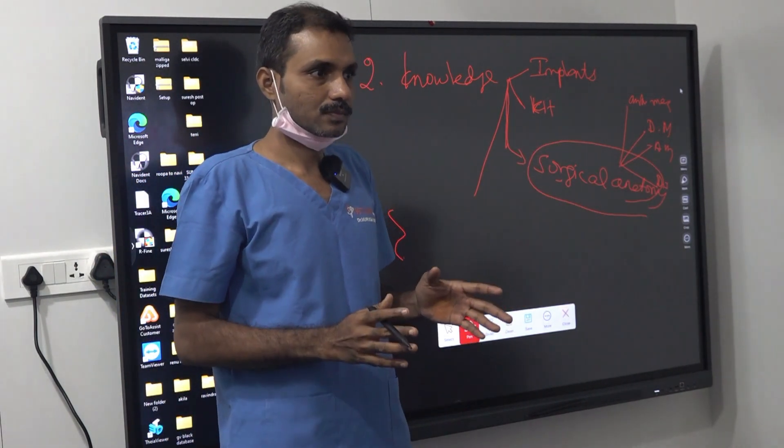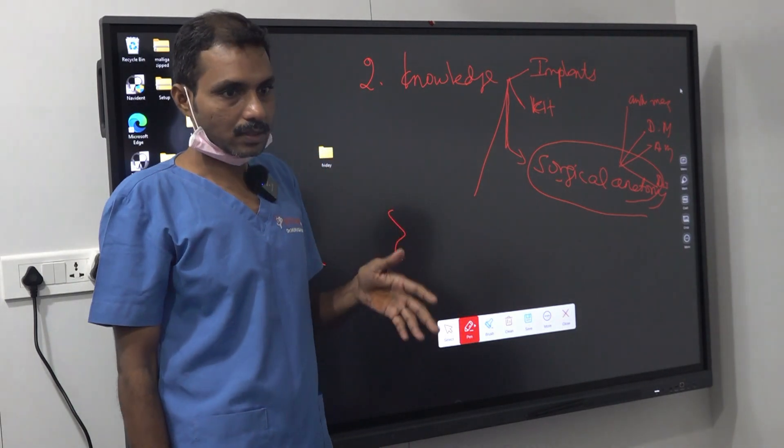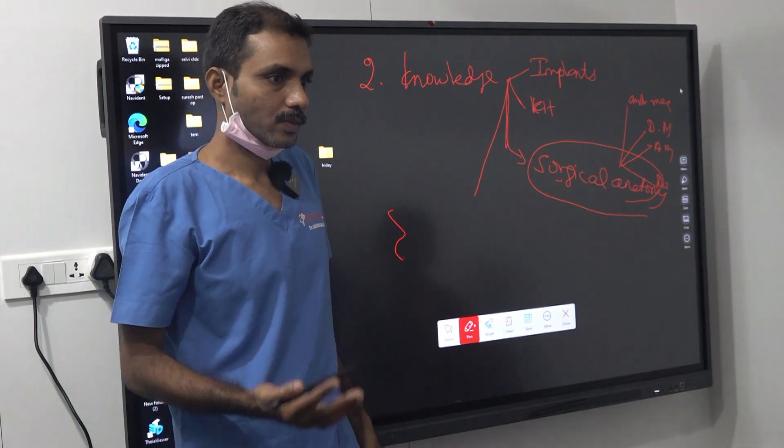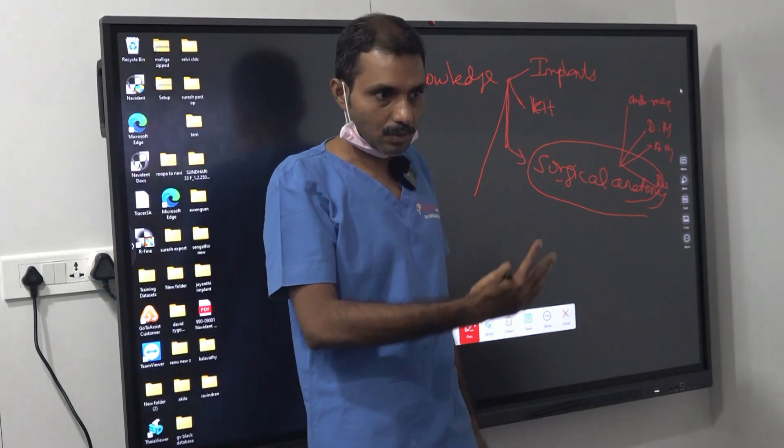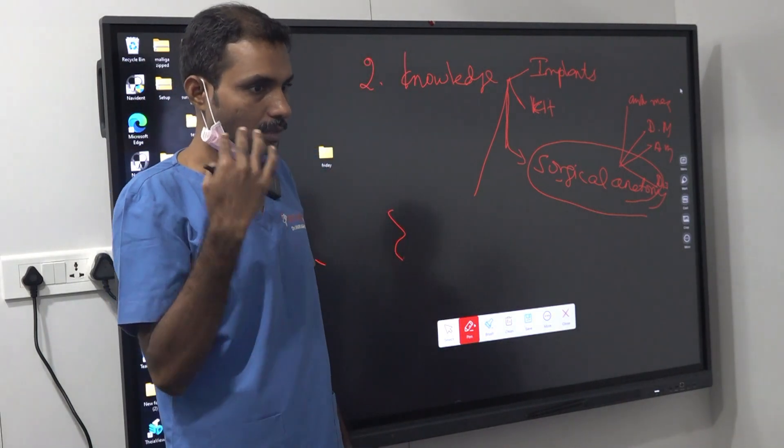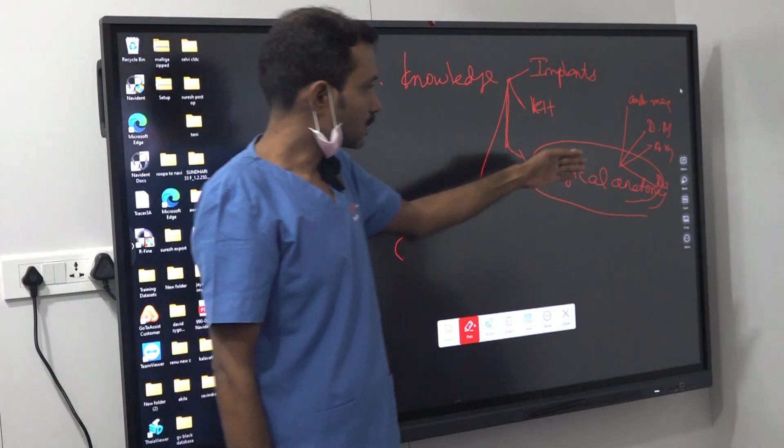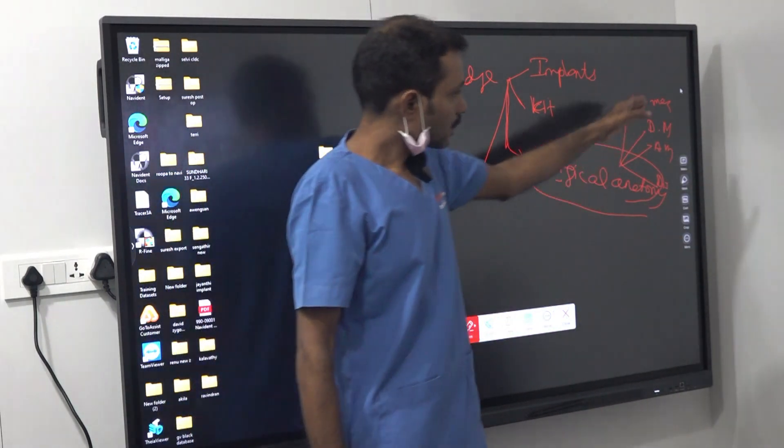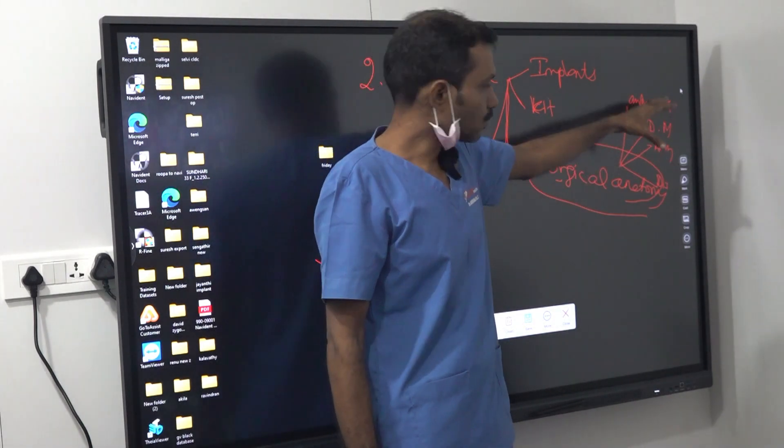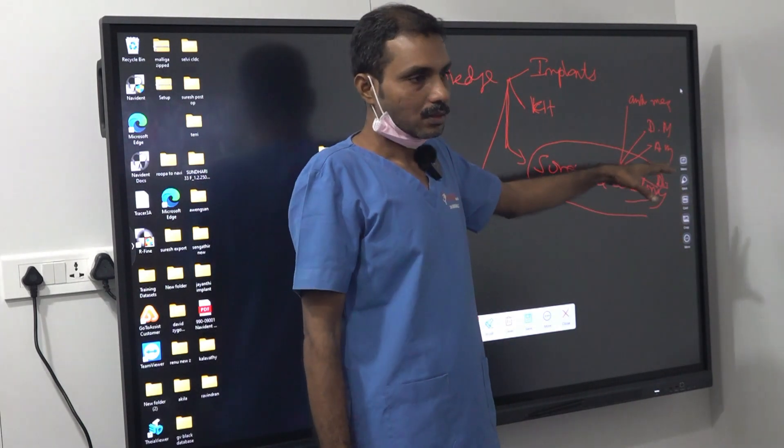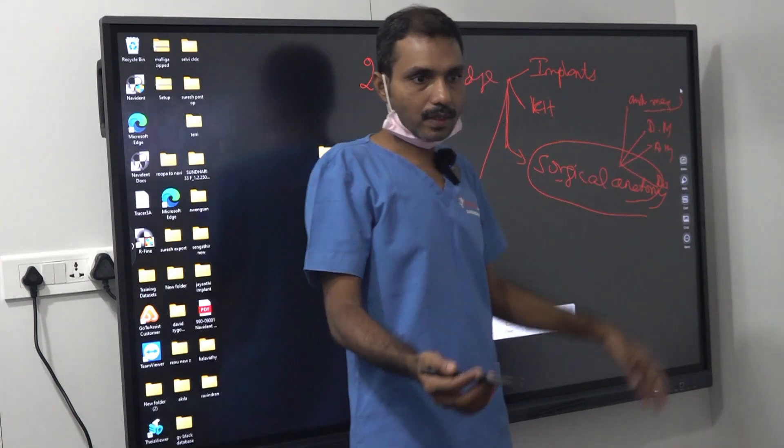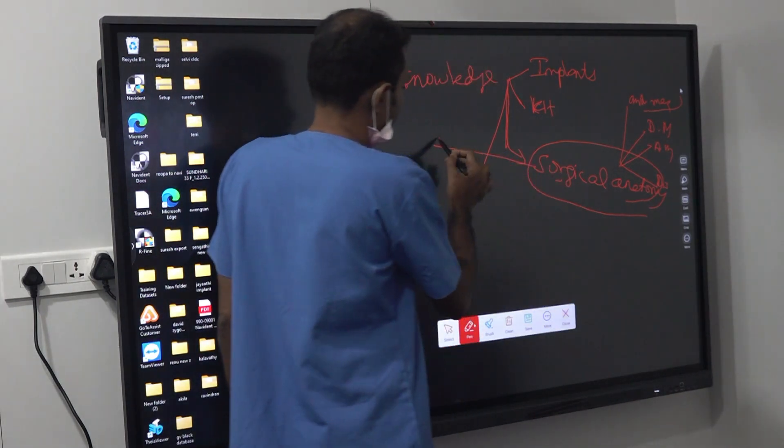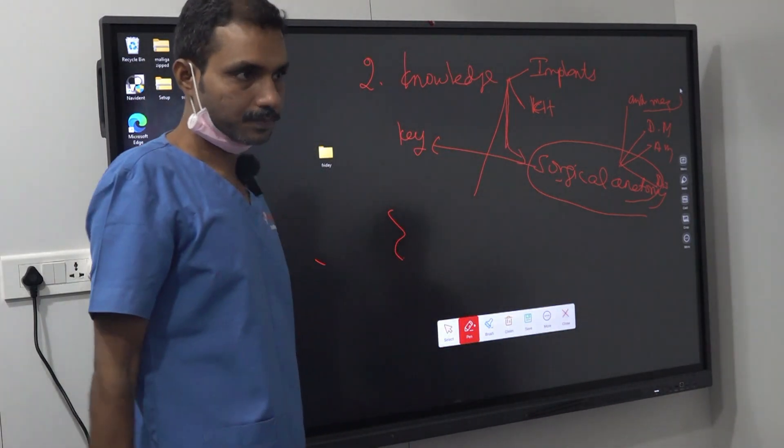Because each and every segment is different from the other segment - the anatomy is different. Anterior maxilla no sinus, but distal maxilla sinus is there. Anterior maxilla you can get support from ASL4, but distal maxilla sinus no. Distal maxilla target is present, which is not present here. These four segments are quite different from each other. If you know all this, if you are thorough with all the segments, then you can handle each and every segment very well. Then you can do full mouth also very well. So the key part is the surgical anatomy part.